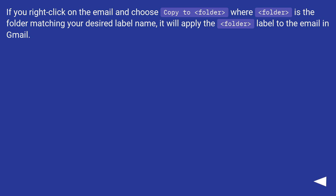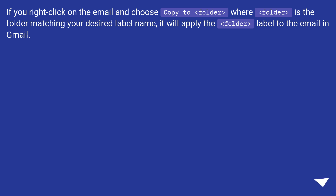If you right-click on the email and choose Copy To > [folder], where [folder] is the folder matching your desired label name, it will apply that label to the email in Gmail.